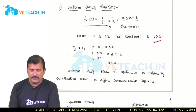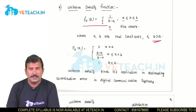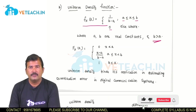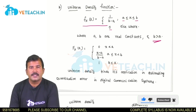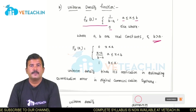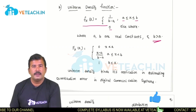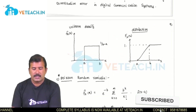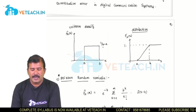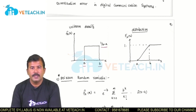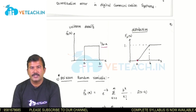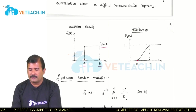Uniform density is useful in finding the quantization error in digital communications. In digital communications, we come across sampling and quantization while converting an analog signal to digital form. Quantization is the rounding of sample values to the nearest integer, and the resulting error can be accurately estimated using the uniform density function. The uniform density has magnitude 1 by b minus a for x from a to b, and the distribution function starts at a and reaches its maximum value of 1 at x equals b.